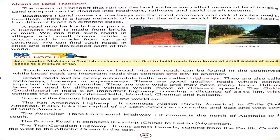Roads are divided into different types. Some roads are not made of cement or bricks — those are unpaved roads. Other roads are made using materials like cement or tar. Some roads are narrow and some are broad roads, which are meant for heavy automobile traffic.